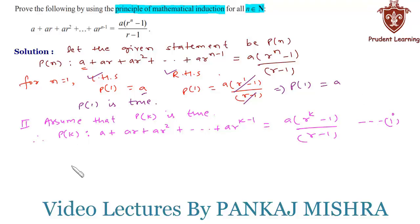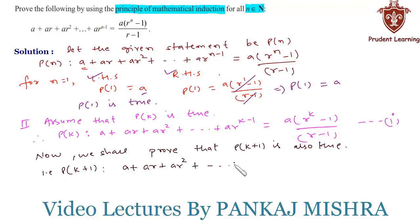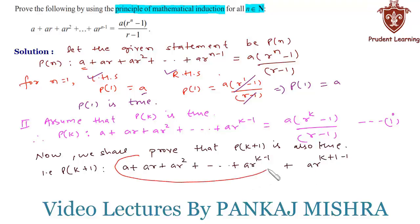In the third step, we try to prove that P(k+1) is also true. P(k+1) states: a plus ar plus ar squared and so on up to ar raised to k minus 1, plus ar raised to k, equals a times r raised to k plus 1 minus 1 upon r minus 1. We substitute the value of the series sum from equation 1 as a times r raised to k minus 1 upon r minus 1.